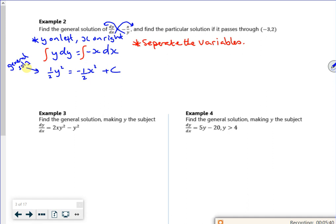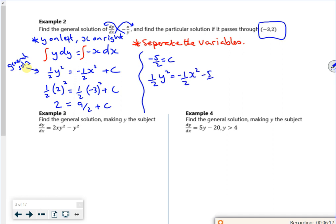Now I want the particular solution, so I'm going to sub in the coordinates. So a half of 2 squared is a half of minus 3 squared plus c. So I've got 4, so that's going to be 2. That's going to be 9 over 2 plus c. So I've got 2 minus 4 and a half. I've got minus 2 and a half. Minus 5 over 2 is c. So currently, it's a half y squared minus 5 over 2.